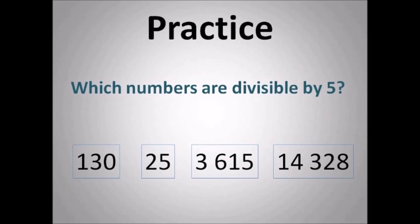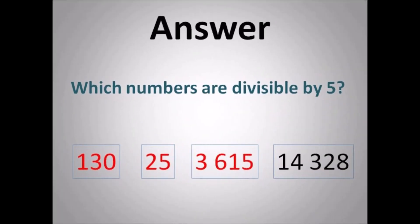Let's move on. Which numbers are divisible by 5? You should know this one — this is simple. For it to be divisible by 5, it must end with 0 or 5. So 130, 25, and 3615 qualify. 14,228 ends with an 8, so that's not divisible by 5. Those first three answers are correct.